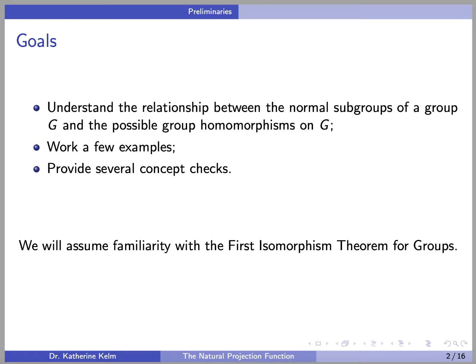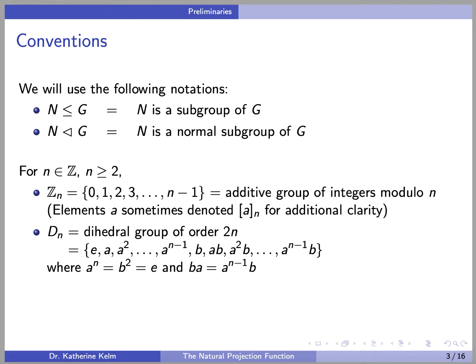We are assuming familiarity with the first isomorphism theorem for groups. We will use the following notational conventions: N ≤ G denotes N is a subgroup of G, N ◁ G denotes N is a normal subgroup of G. For an integer n greater than or equal to 2, Z_n will denote the additive group of integers modulo n, with elements sometimes denoted with brackets for additional clarity. D_n will denote the dihedral group of order 2n, with a rotational element A of order n and a flip element B of order 2.